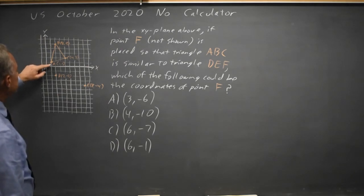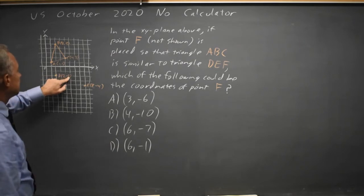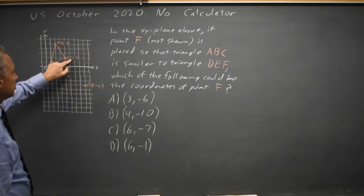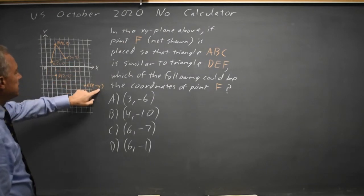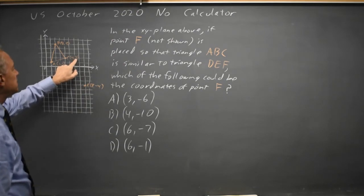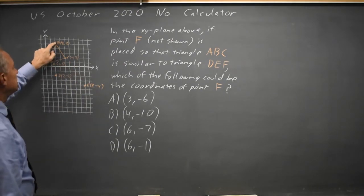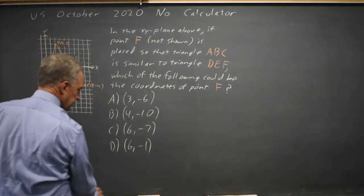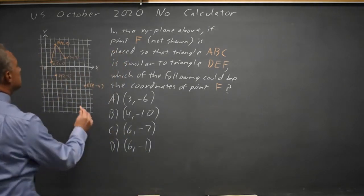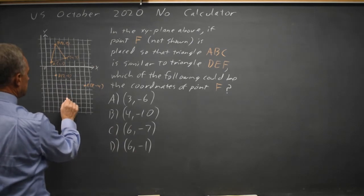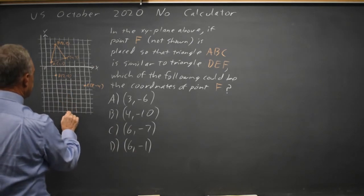And in fact point A to point D both coordinates are double except the Y is negative 2. Point C to point E both coordinates are doubled in magnitude but the Y in point E is negative 2 times the Y in point C. So I'm going to check if I double the coordinates of point B and then reflect to make Y negative. That would give me a point X equals 4, Y equals negative 10, which is right here.